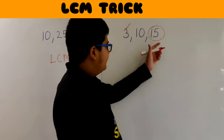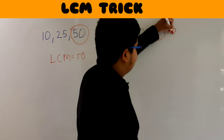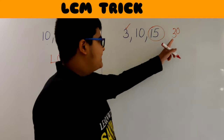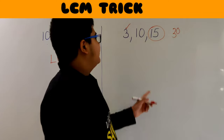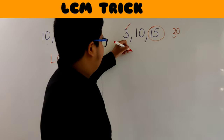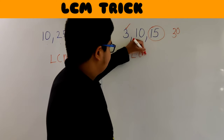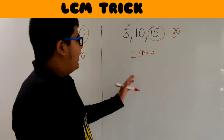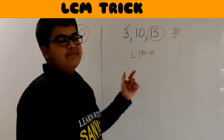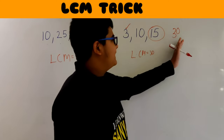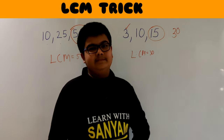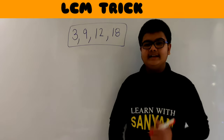So 15 × 1 = 15; the next multiple is 15 × 2 = 30. Now check whether 30 completely divides 10 or not. We know 30 is completely divisible by 10, which means our LCM is 30. So when the largest number is not completely divisible by the other numbers, we take multiples of the largest number, and whichever multiple completely divides all the other numbers is our LCM.